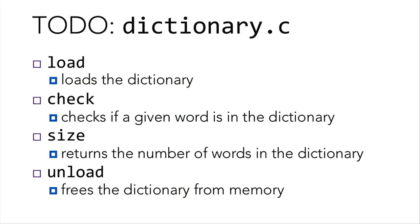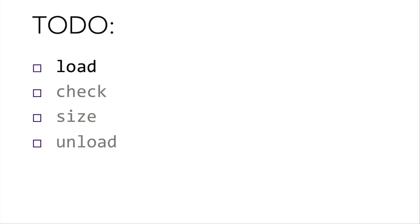So what do we need to do? We need to fill in dictionary.c. In dictionary.c, we have the helper function load, which loads the dictionary. The function check, which checks if a given word is in the dictionary. The function size returns the number of words in the dictionary. And finally, we have unload, which frees the dictionary from memory. So first, let's tackle load.